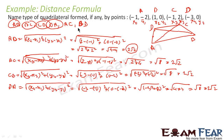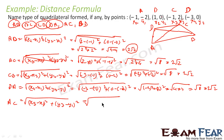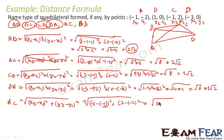Now let us find the diagonals. We will find AC, the distance between A and C, which are points 1 and 3. That is root of (x3 minus x1) squared plus (y3 minus y1) squared. x3 is minus 1 and x1 is minus 1, so minus 1 minus minus 1 is 0. y3 is 2 and y1 is minus 2, so 2 minus minus 2 is 4. That is root of 0 squared plus 4 squared, which is 4.